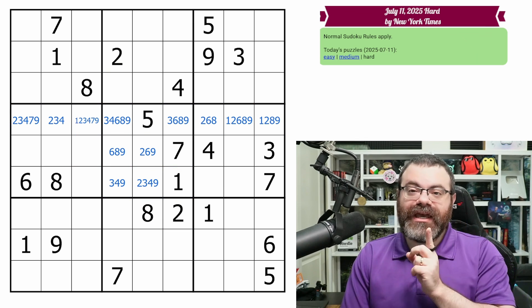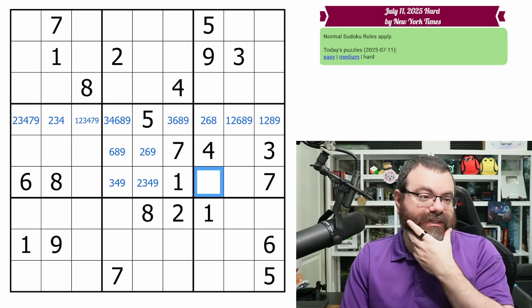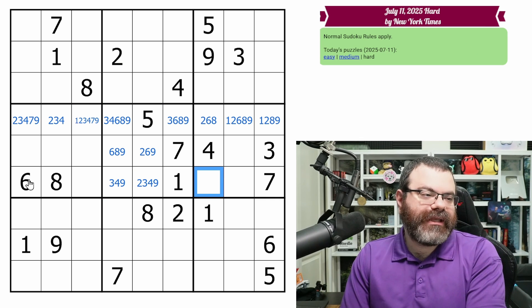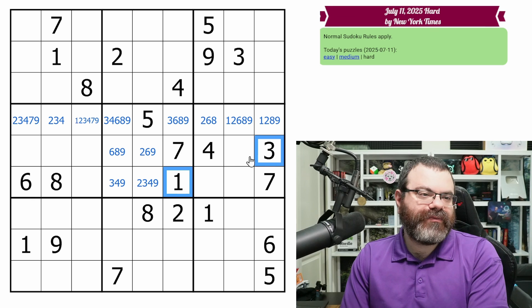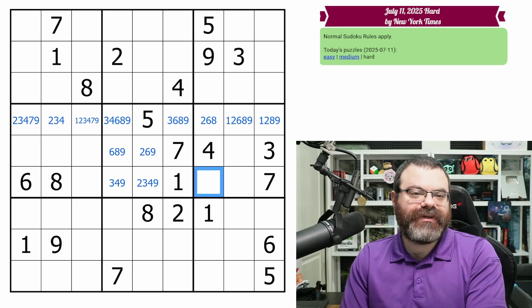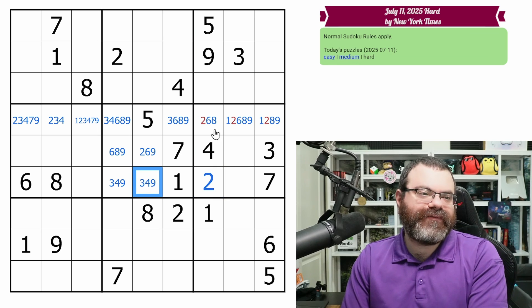And then you just need to find one thing, which is that this cell here is a naked single two. So you can see it sees a one, three, four, five, six, seven, eight, nine. So we need to find this two first. But that's all you need to find.